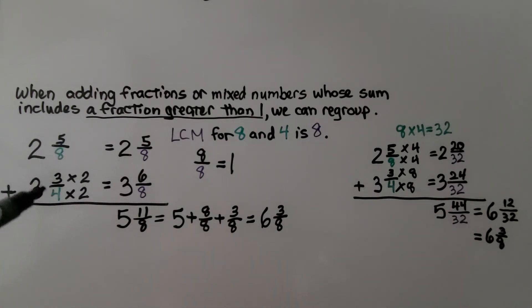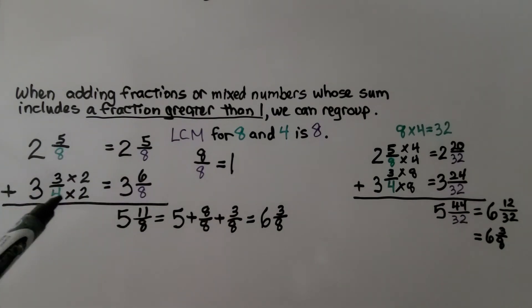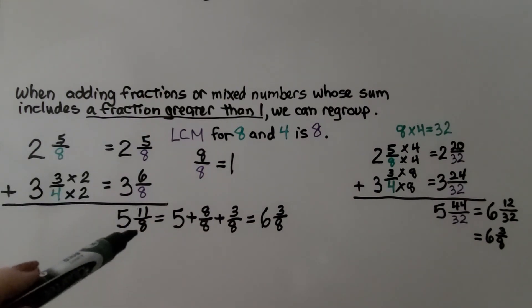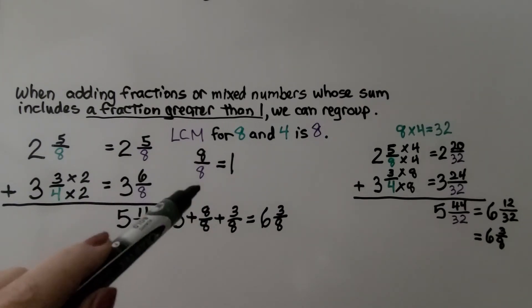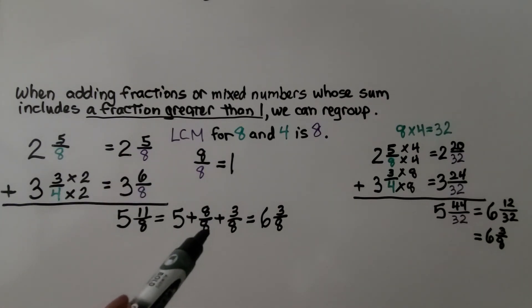Here we have a denominator of 8 and 4. Well, the least common multiple for 8 and 4 is 8. They can both meet at 8. So this is just going to slide over because its denominator is already an 8. And 4 times 2 is 8. We need to multiply the numerator times 2. We get a 6. We add the whole numbers and add the numerators. We get 5 and 11/8. And since 8/8 equals 1 whole, if you had a candy bar split into 8 parts and you had all 8 of them, you'd have the whole candy bar. So 8/8 is equal to 1 whole. That would be 5 and 1 is 6 and 3/8.